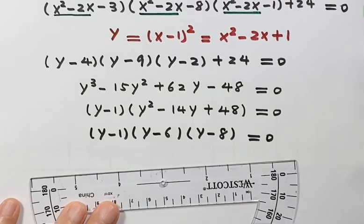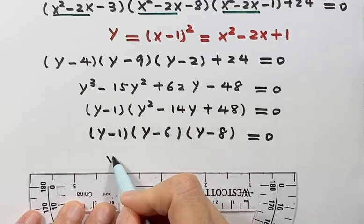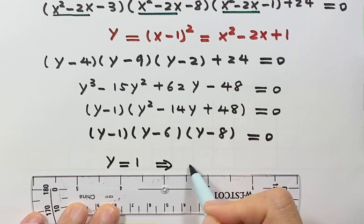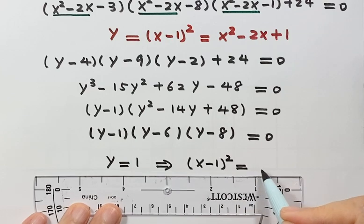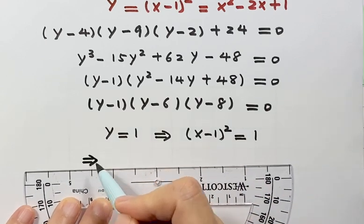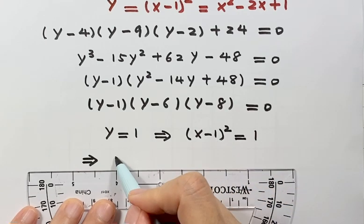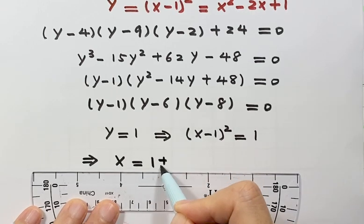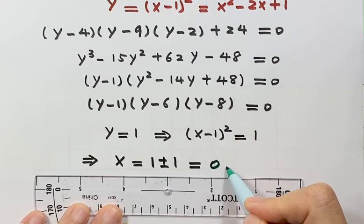For this equation there are three solutions. The first solution is y equals 1. Since y equals x minus 1 squared, that means x minus 1 squared equals 1. Taking the square root of both sides with a plus-or-minus sign, then adding 1 to both sides, we have x equals 1 plus or minus 1, giving two solutions: x equals 0 and x equals 2.